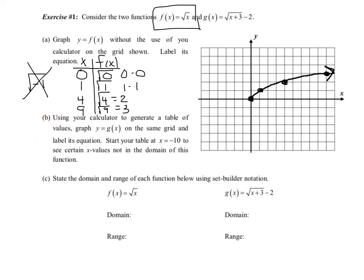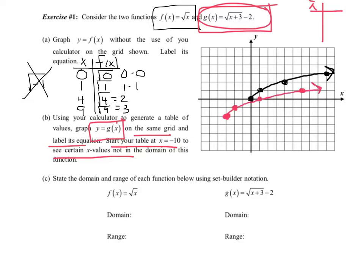Part B says use your calculator to generate a table of values for g(x). So g(x) is this red equation up here. On the same grid and label its equation. Start your table at negative 10 to see certain values of x not in the domain of this function. So you are grabbing your calculator. You are just typing in this g(x) function, and you're going to plot those points. So pause it. And I just want you to remember, just plot the nice points.